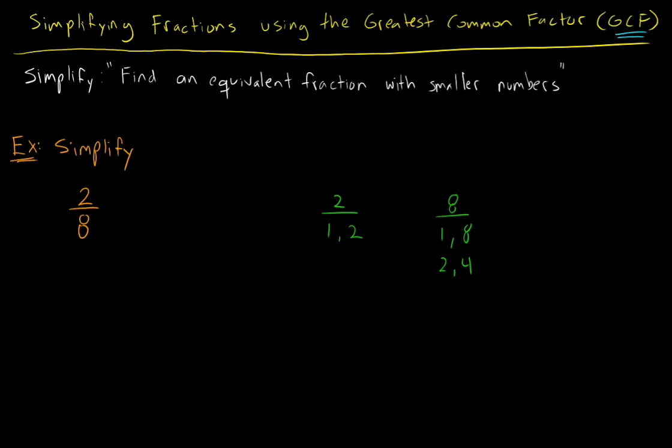Now let's see which one is the greatest factor that they have in common. Well, they both have the number 1 in common, but they also have the number 2 in common. But we are going to select the greatest one, so we're going to select the number 2. And that's the number that we're going to divide the numerator and the denominator by to find our equivalent fraction with smaller numbers.